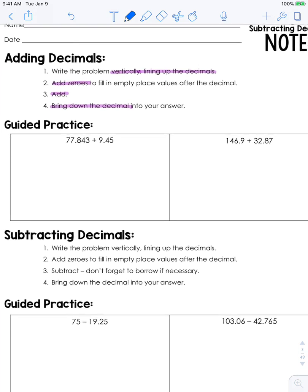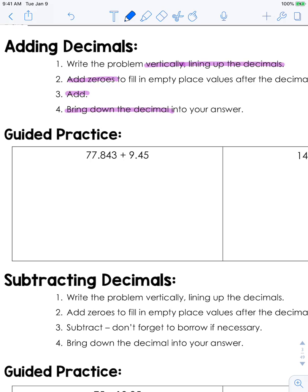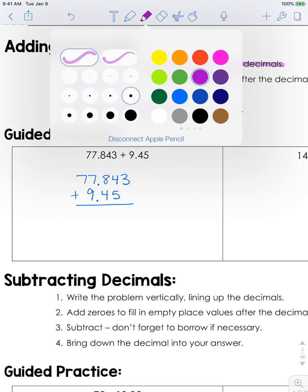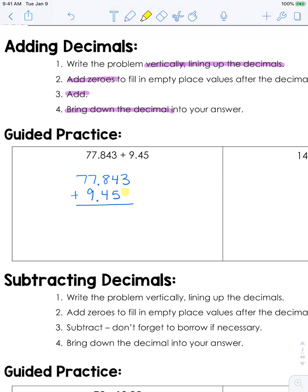So let's follow these steps and do a few guided practice problems. First we're going to write this problem vertically. So we will have 77.843 plus, lining up the decimals, 9.45. We have one place value here that does not have a digit, so we're going to add a zero here.